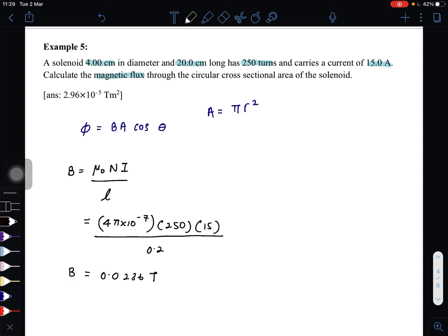So now that we have the value for magnetic field, we can find the magnetic flux using this formula. B is 0.0236, and then area is π... since diameter is 4 cm, radius will be 2 cm. Convert to meters: 0.02 squared, cos 0°.